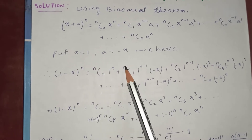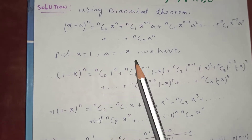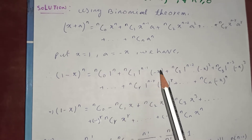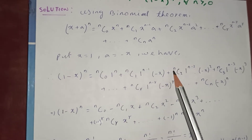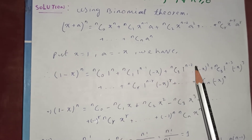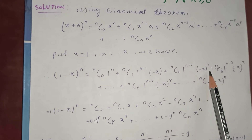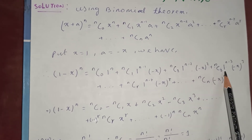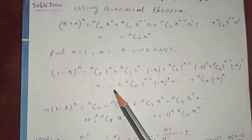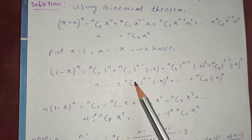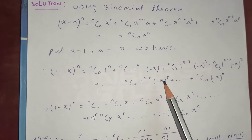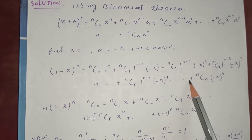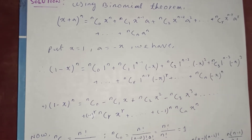We have (1 minus x) to the n equal to nC0 times 1 to the n, plus nC1 times 1 to the n minus 1 times (negative x), plus nC2 times 1 to the n minus 2 times (negative x) squared, plus nC3 times 1 to the n minus 3 times (negative x) cubed, plus so on, plus nCr times 1 to the n minus r times (negative x) to the r, plus so on, plus nCn times (negative x) to the n.